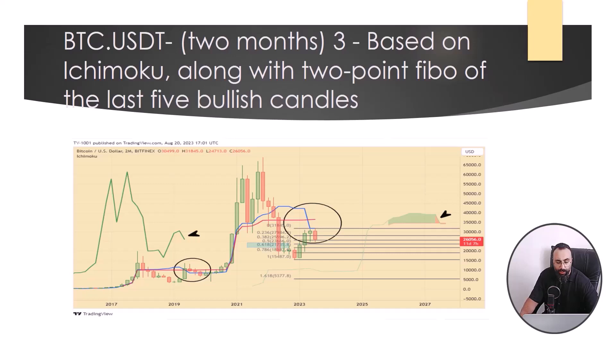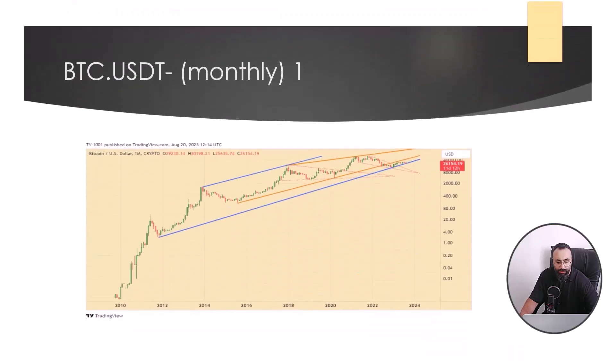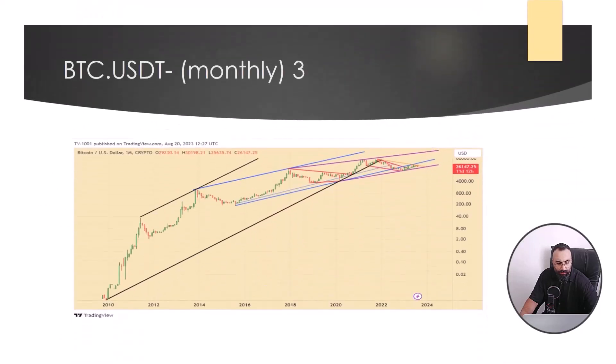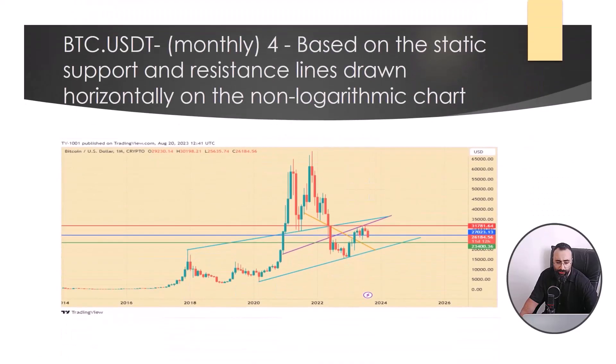Let's have a general overview in this picture and another general overview in this picture. Based on the static support and resistance lines drawn horizontally on the non-logarithmic chart, we have analysis. The price could not overcome the static and dynamic resistance and even the support of the blue line was lost. And now the next support is the support of the green line.